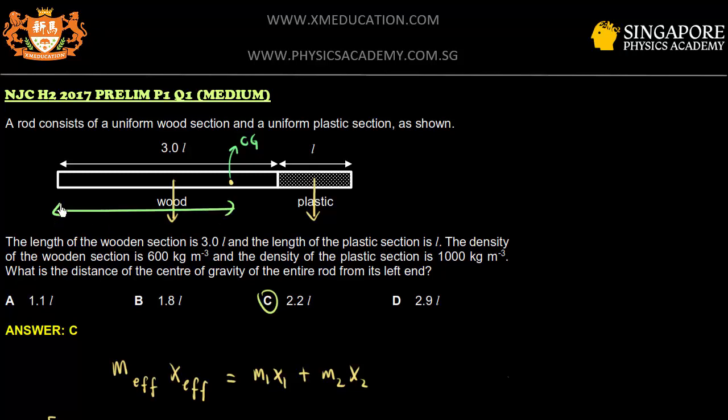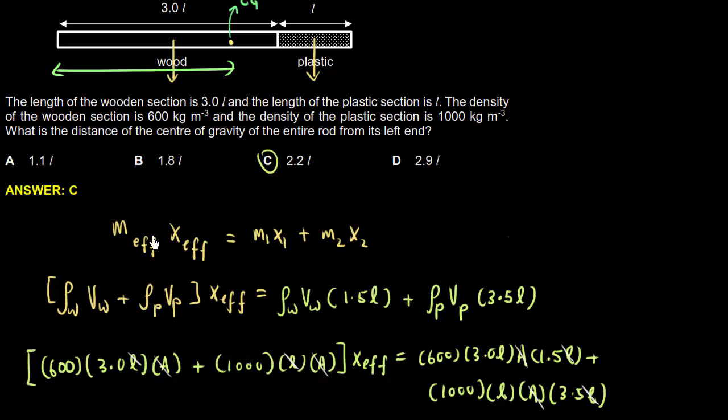So how are we going to do that? You need to use this formula, call it M-effective X-effective equal to M1 X1. This M1 X1 is referring to the wood plus M2 X2, this refers to the plastic.